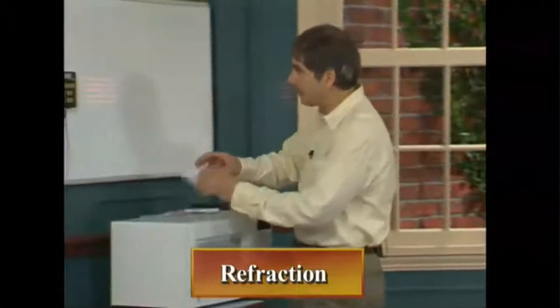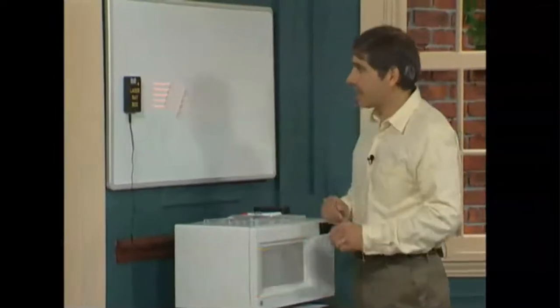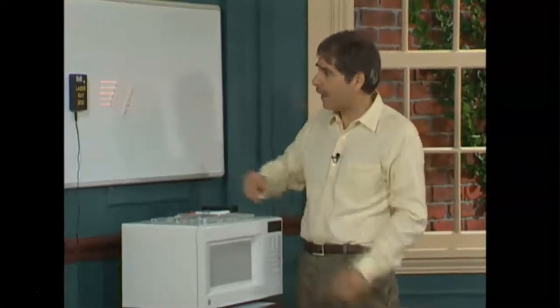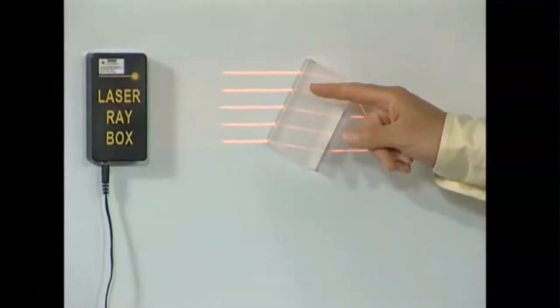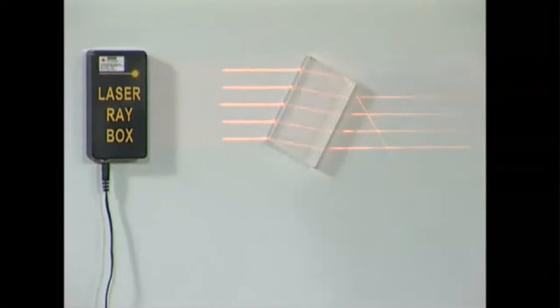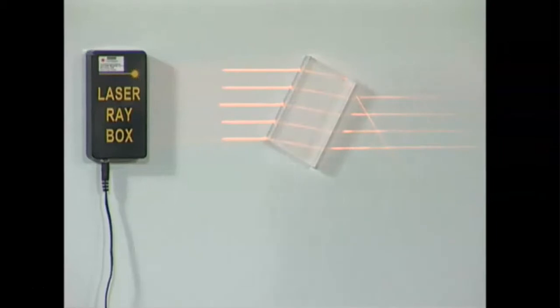How do we form images? How do we make representations of the world with light waves? The key is the phenomenon of refraction — the bending of light as it passes from one medium to another. Here I have a laser with five beams. Each beam, when it enters a rectangular block of plastic at an angle, bends more toward the direction perpendicular to the interface between air and glass. What we need is a shaped object that bends light so that light waves converge on a single point — and an object like that is called a lens.